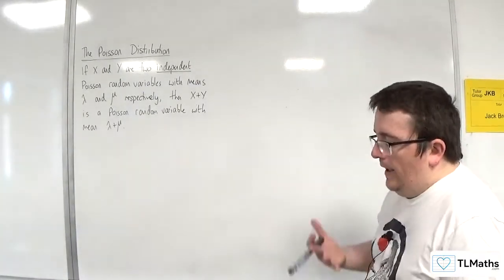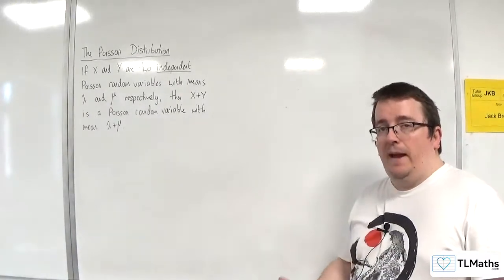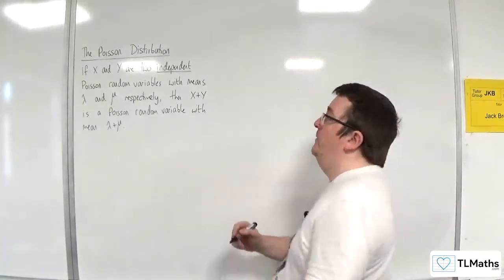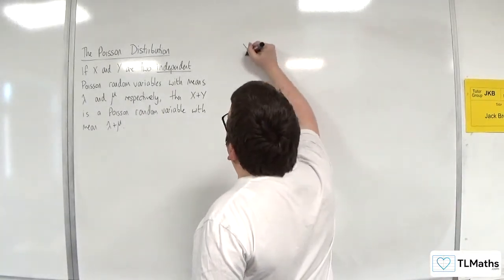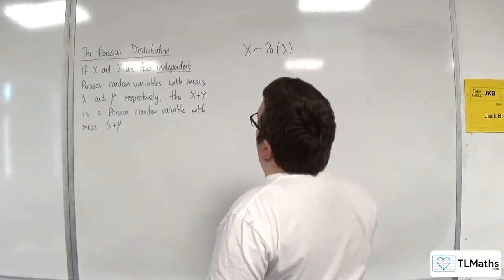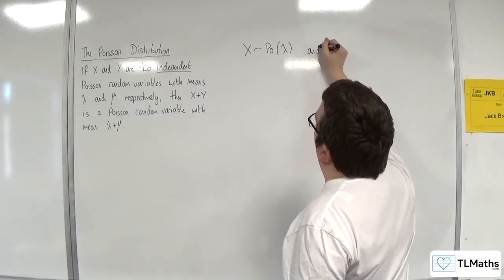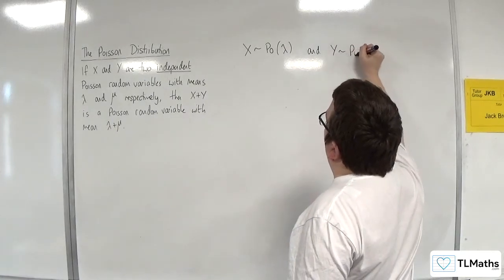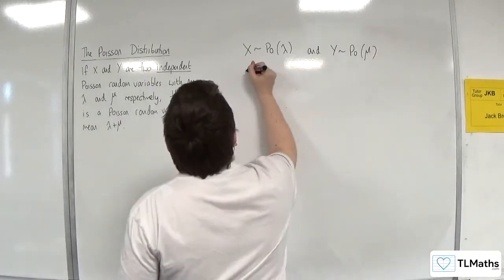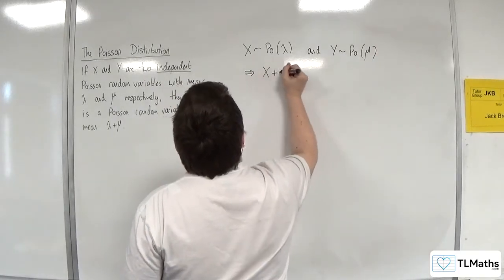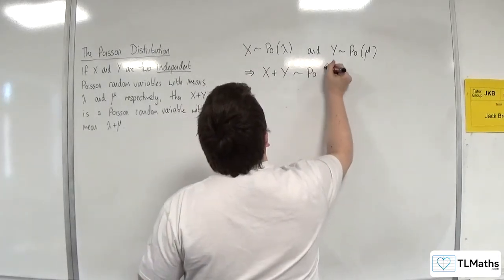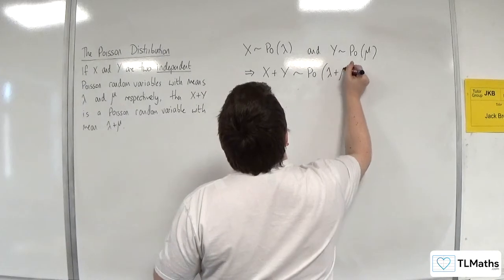If X and Y are two independent Poisson random variables with means lambda and mu respectively—what I mean by that is that X is a Poisson distribution with mean lambda, and Y is a Poisson distribution with mean mu—then X plus Y is a Poisson random variable with mean lambda plus mu.